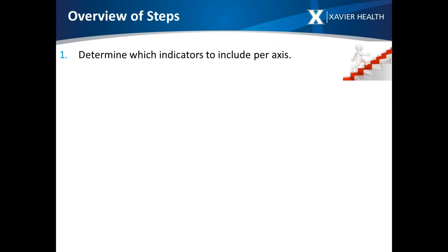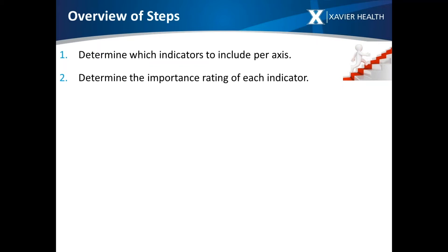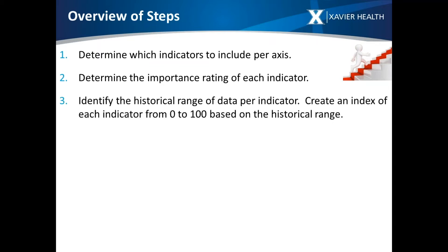Step one is to determine which indicators to include per axis. For the drug component on the x-axis, what are the indicators we're going to measure to roll into the risk profile? Step two is to determine the importance rating of each indicator. For example, recalls might carry a heavier weighting factor than scrap rate. You then look at the historical range of data for each indicator and create an index scaling that historical data from 0 to 100 — normalizing it per indicator for each axis.